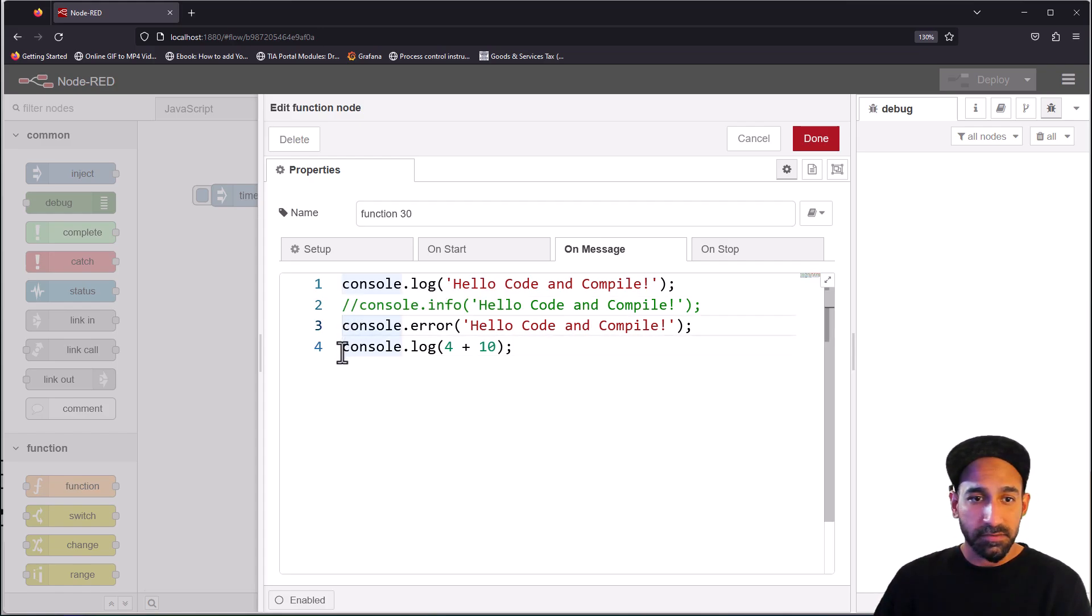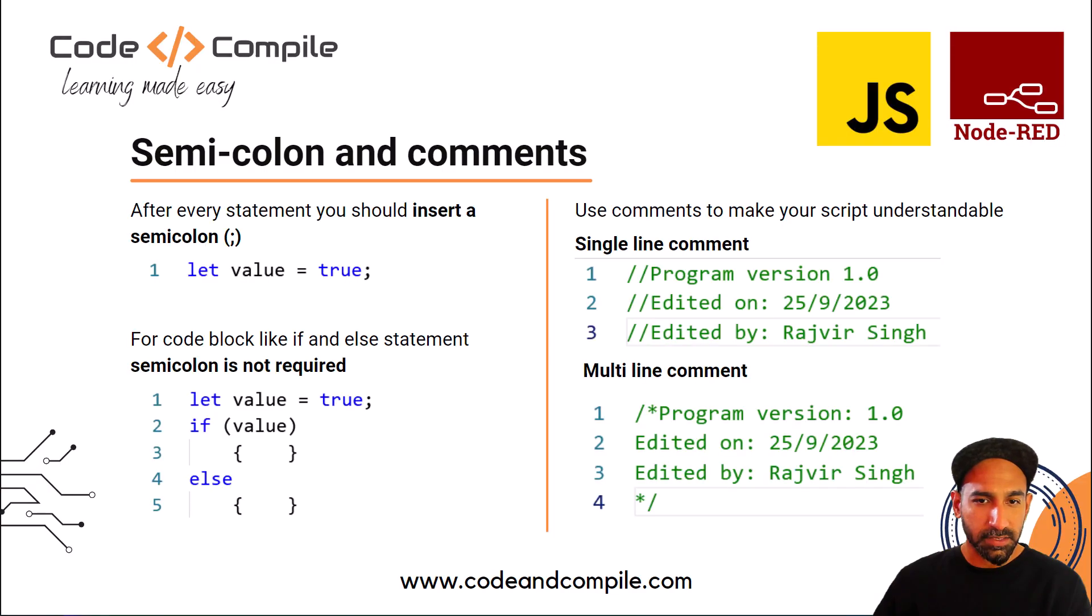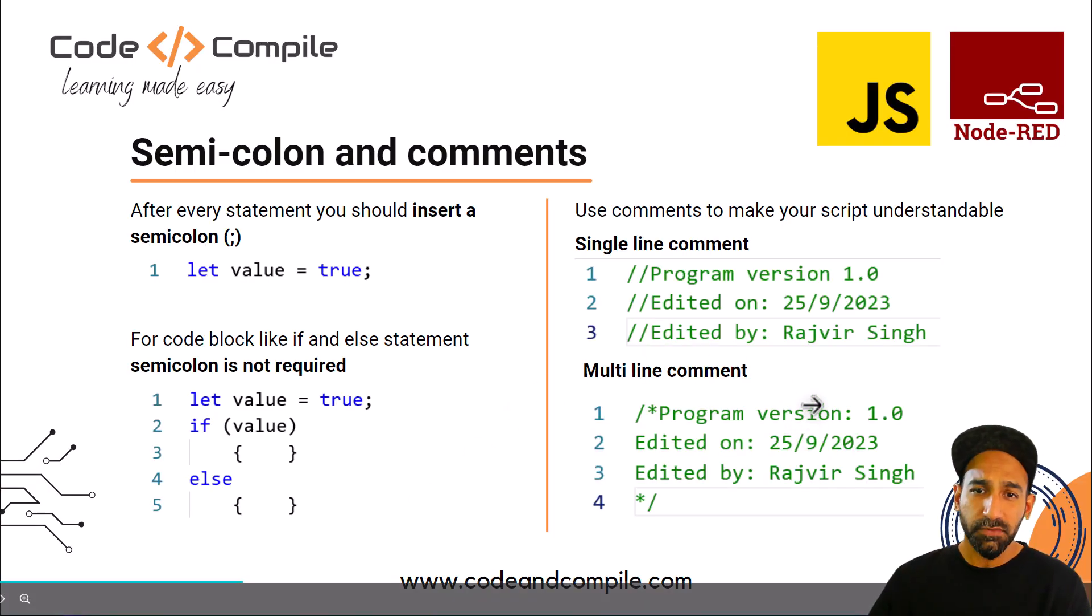You can also add multi-line comments. For example, I want to comment all of these three lines, I can do slash star and star slash. Now this makes these lines comments and only the other statement will be executed.